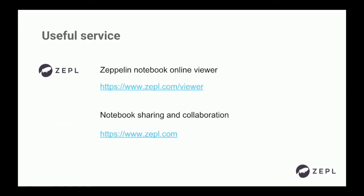I should mention what I'm doing in my company — otherwise my CEO will be angry. We are making a product called Zepl, which enables notebook collaboration, especially on Zeppelin notebook collaboration. We also provide an online viewer as a community service — and you don't have to pay. Zeppelin doesn't have a community notebook viewer like Jupyter does, and GitHub also provides a notebook viewer. So we made it as a community service. If you want to publish your notebook but don't want to manage a Zeppelin instance, you can just use the online viewer. It's free.